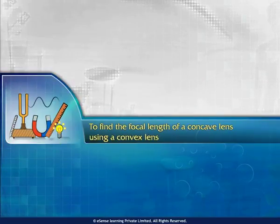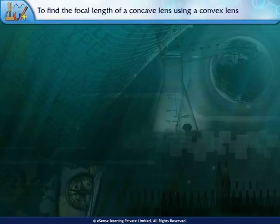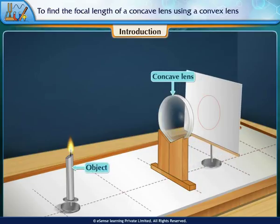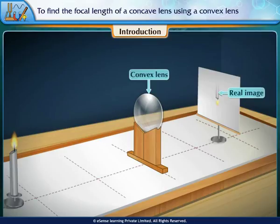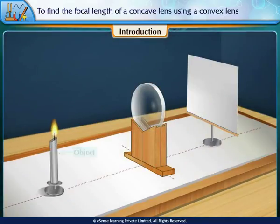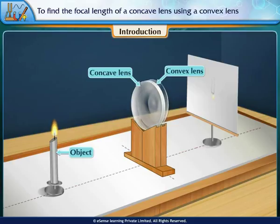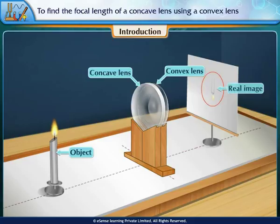Experiment 10: Find the Focal Length of a Concave Lens Using a Convex Lens. A concave lens always forms a virtual image of an object, while a convex lens forms a real image when the object distance is greater than the focal length. To find the focal length of a concave lens using a convex lens, the two lenses are used together to form a converging lens so as to form a real image.